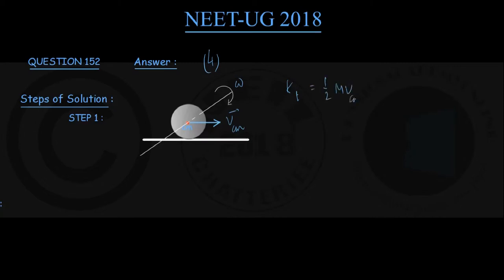That is my equation number 1. We assume the mass of the sphere is capital M, its radius is capital R. Let me write somewhere: assume mass is M and radius is R.